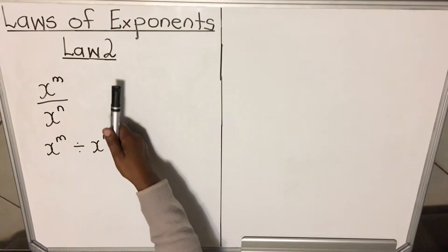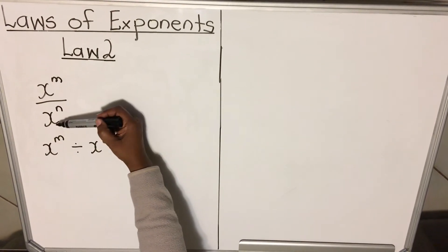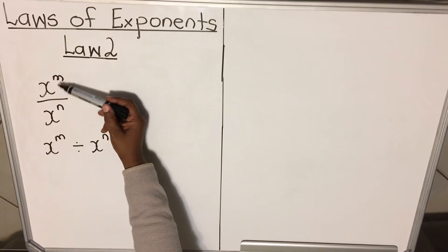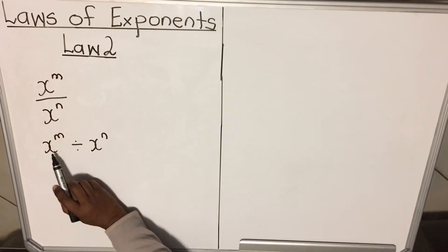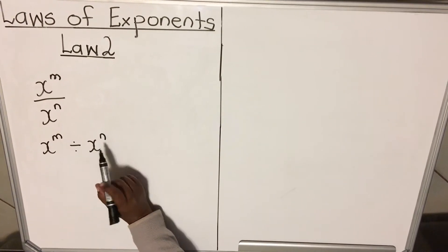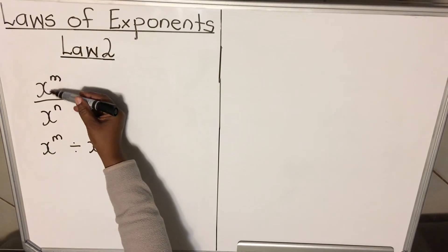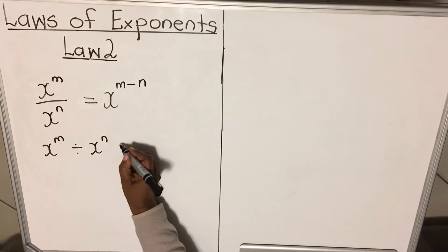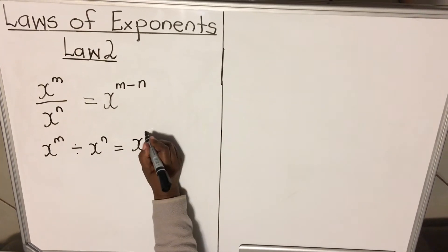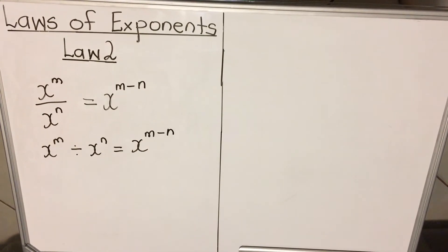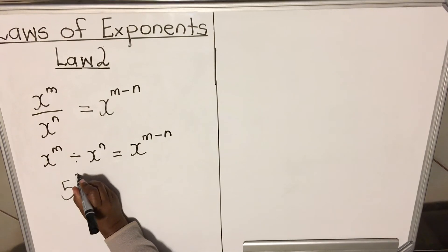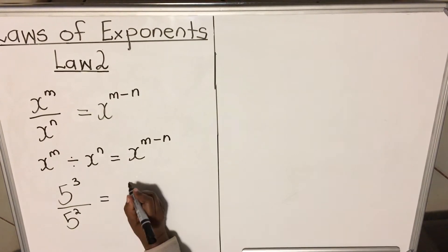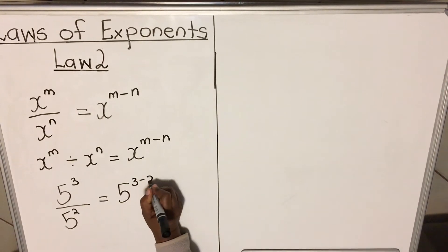Law two talks about division. It says: when you have the same base and you are dividing, you subtract the exponents. Division can be written two ways: x to the power m divided by x to the power n. The law says when you divide with the same base you subtract the exponents, giving x to the power m minus n. For example, five to the power three divided by five to the power two gives five to the power three minus two, which is five to the power one — the same as five.